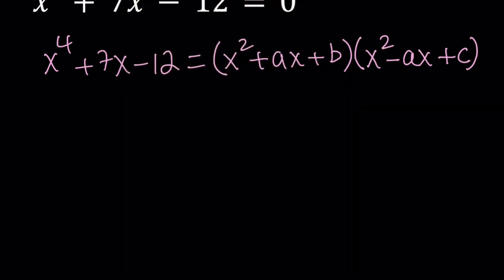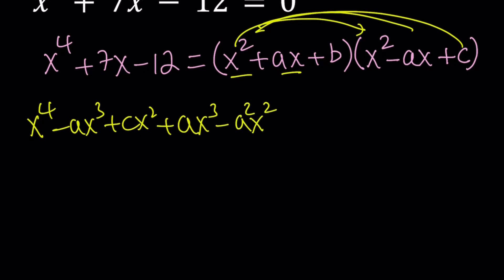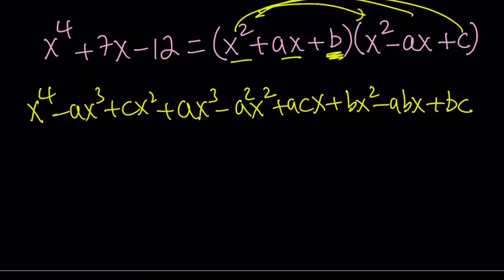Having said that, let's go ahead and distribute this. I want to start with the right-hand side. I have x to the fourth power minus ax cubed plus cx squared, distributing this over everything. Then I'm going to focus on ax: ax cubed minus a squared x squared plus acx. And then I'm going to distribute b: plus bx squared minus abx plus bc. Sometimes you don't know if you're going to get integer coefficients. You just test it out.